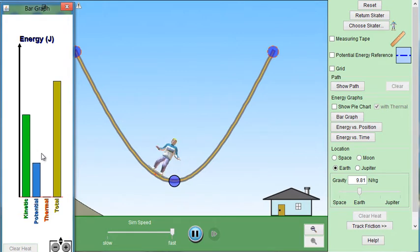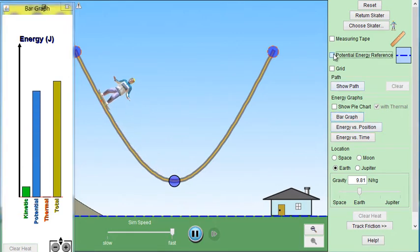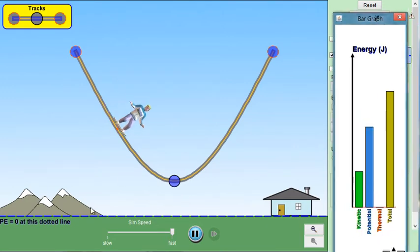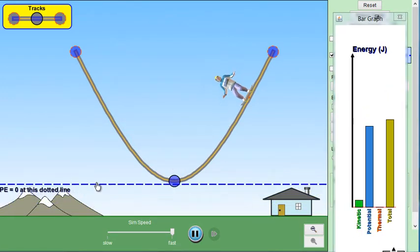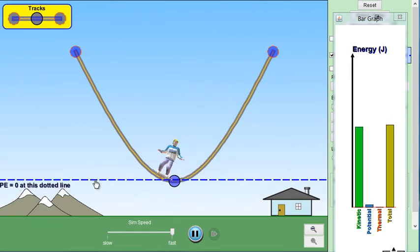His potential energy never goes all the way to zero because look at where we have our potential energy reference for zero. We are saying that PE equals zero at the ground. If we want to make PE equals zero at the bottom of the ramp, then we can just slide it up. And now notice how the potential energy does go to zero when he's at the bottom.